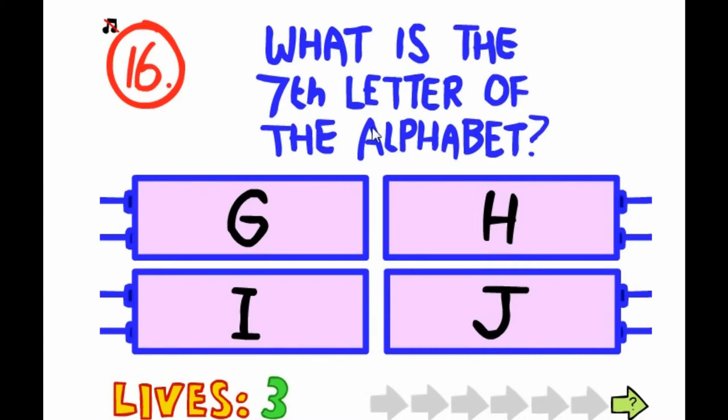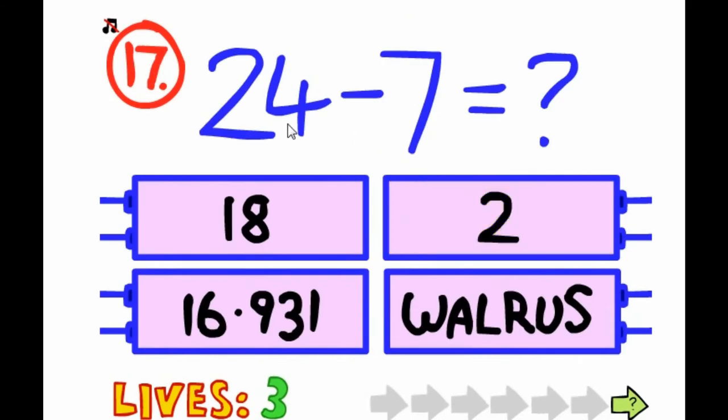What is the seventh letter of the alphabet? A B C D E F G. No, it's not G guys. One, two, three, four, five, six, seven. Yeah, it's H.